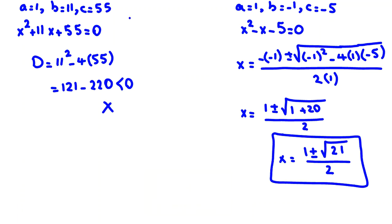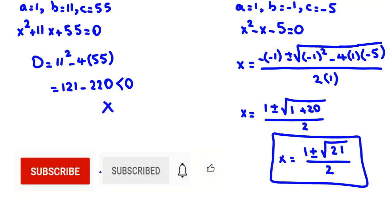The answer is x equals (1 plus or minus square root of 21) over 2. As mentioned, there are around 40 to 50 important ideas in each topic — combinatorics, geometry, algebra, number theory. If you want to learn them and improve your problem solving, feel free to send a message to the WhatsApp number in the description. Thanks for liking, subscribing, and turning on notifications.